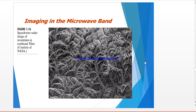In the microwave band, figure 1.16 shows a spaceborne radar image of mountains in southeast Tibet. The dominant application of imaging in the microwave band is radar. In many cases radar is the only way to explore inaccessible regions of the earth's surface; an imaging radar works like a flash camera — it provides its own illumination via microwave pulses to take snapshot images.